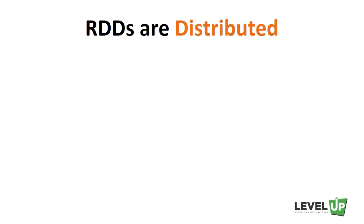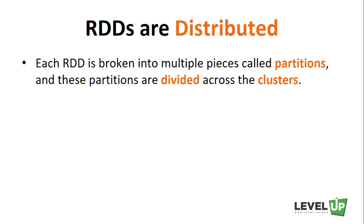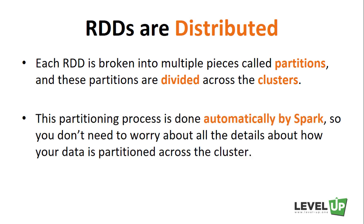First of all, RDDs are distributed. Each RDD is broken into multiple pieces called partitions, and these partitions are divided across the clusters. Let's say your Spark cluster has 8 nodes — an RDD can be split into 8 partitions. The number of partitions is configurable, and the RDD spread across multiple nodes can be operated on in each node, in parallel and independently. This partitioning process is done automatically by Spark, so you don't need to worry about all the details about how your data is partitioned across the cluster.